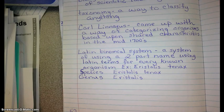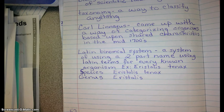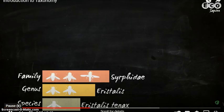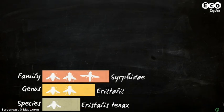So we've got our example, Eristalis tenax. The species is Eristalis tenax. The genus is Eristalis — you have a genus name first, and then a species name second. That's the two-part system, or the binomial: bi meaning two, nomial meaning name. Members of this genus are found in the family Syrphidae, the hoverflies. Hoverflies belong to the order Diptera, the true flies.